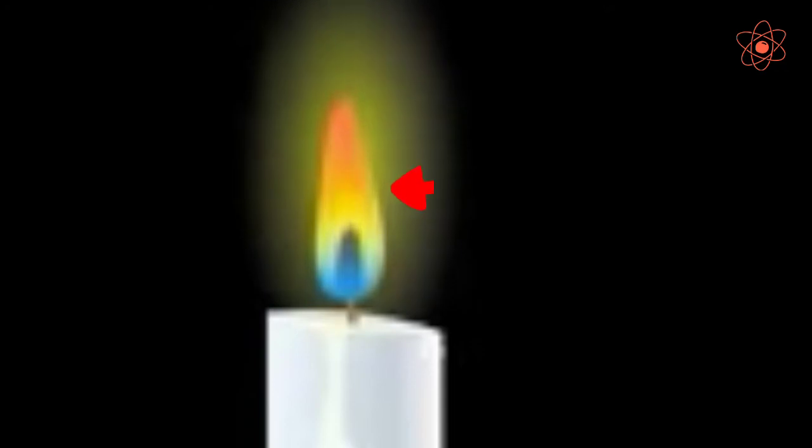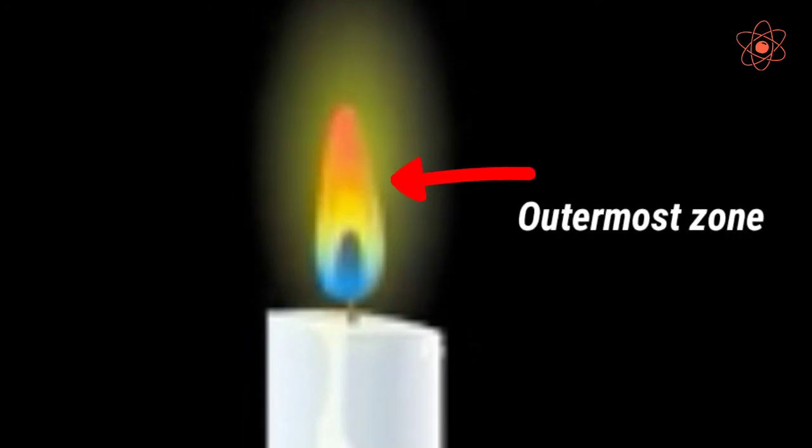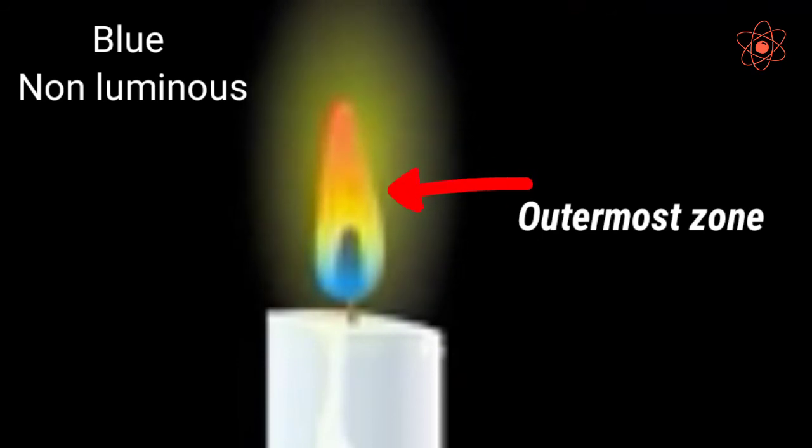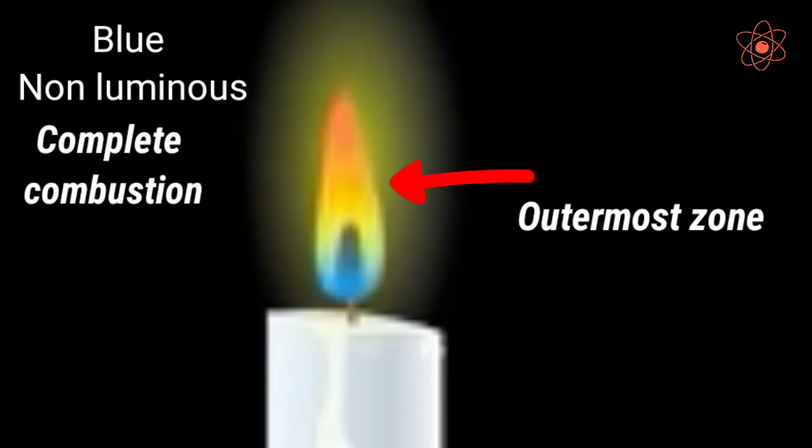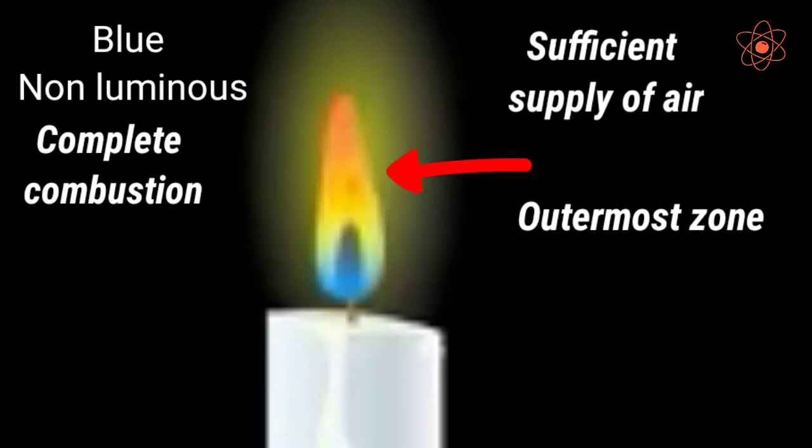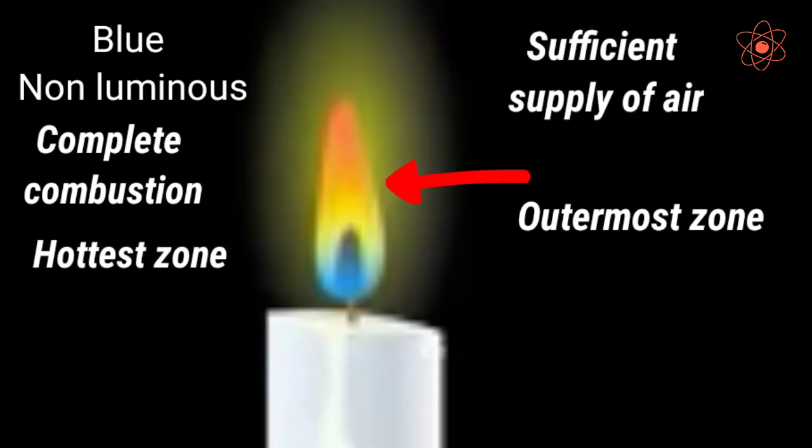Third, the outermost zone. This zone is blue and non-luminous. In this zone, complete combustion of wax hydrocarbons takes place due to sufficient air around it. It is the hottest zone in the candle flame.